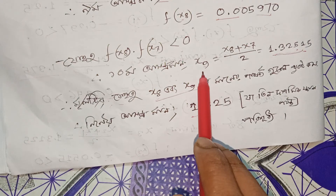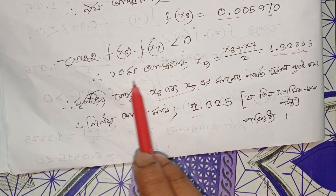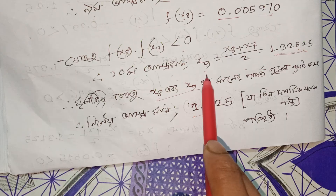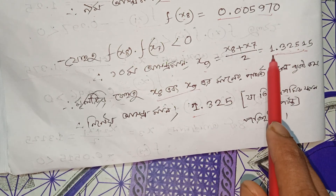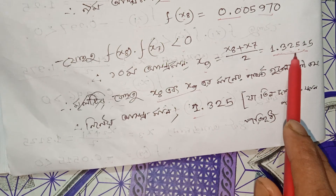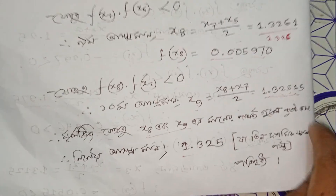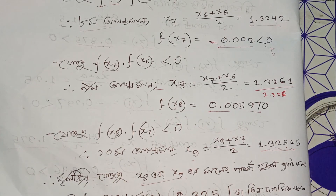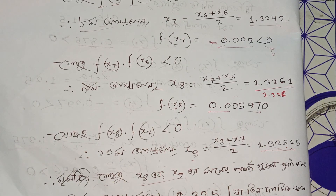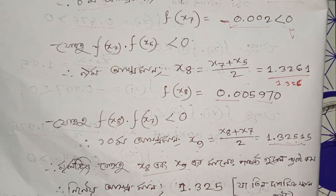In the previous pictures, the national table shows 1.3245. I will take a look at x₁₀. I will take a look at x₁₀'s prime. In the first picture, I will take a look at x₁₀'s value. The final answer converges to 1.3245.